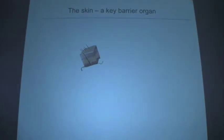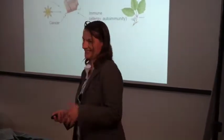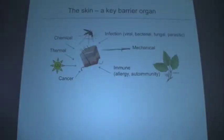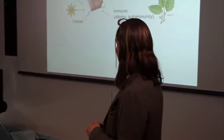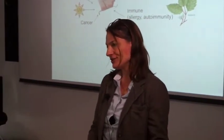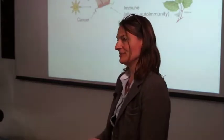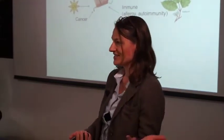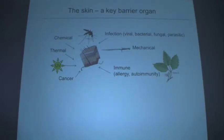My lab has become very interested in the skin, which is a key barrier organ. That means the skin is exposed to a lot of different threats on a daily basis — infections, all different types of pathogens, insect bites, thermal insults, chemical insults. Imagine a coffee spill on your skin — your liver doesn't have to deal with that. A lot of other organs are much more protected. Additionally, UV radiation is another major insult.